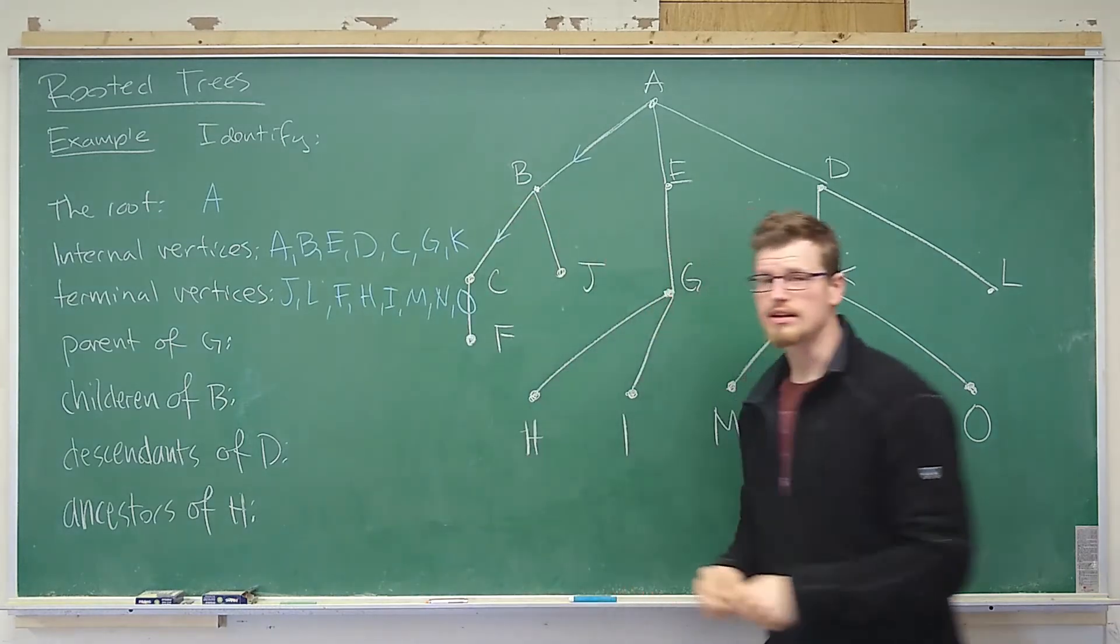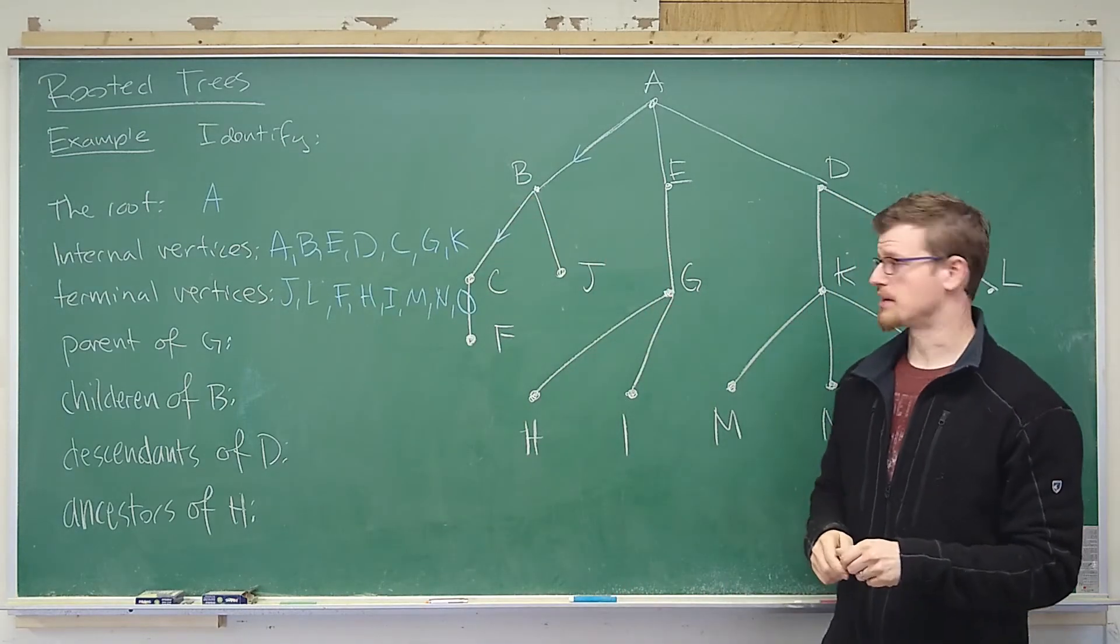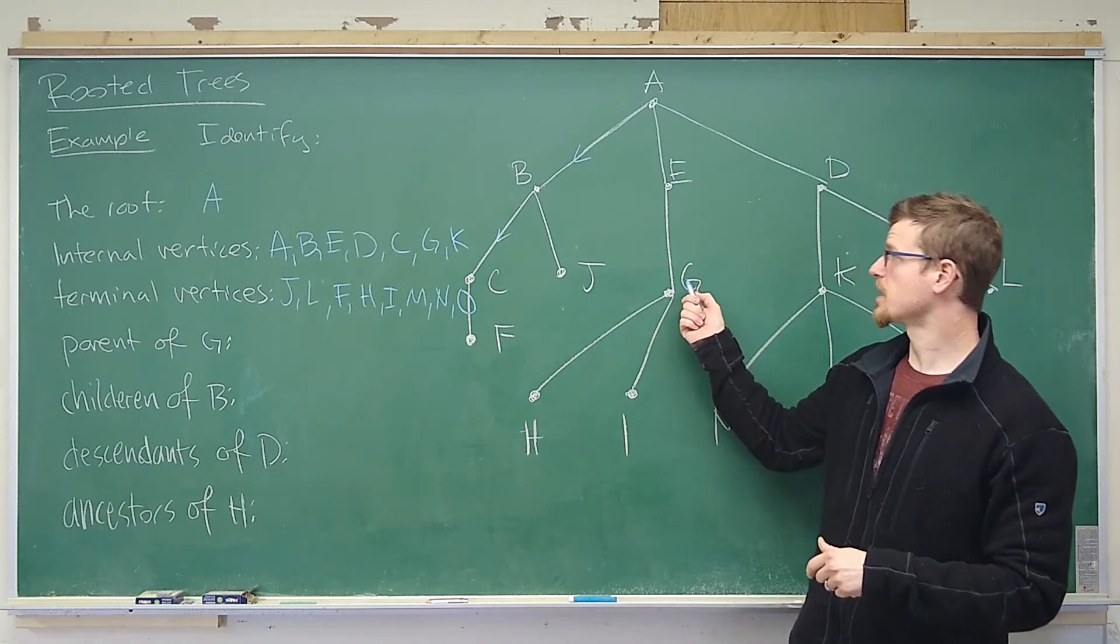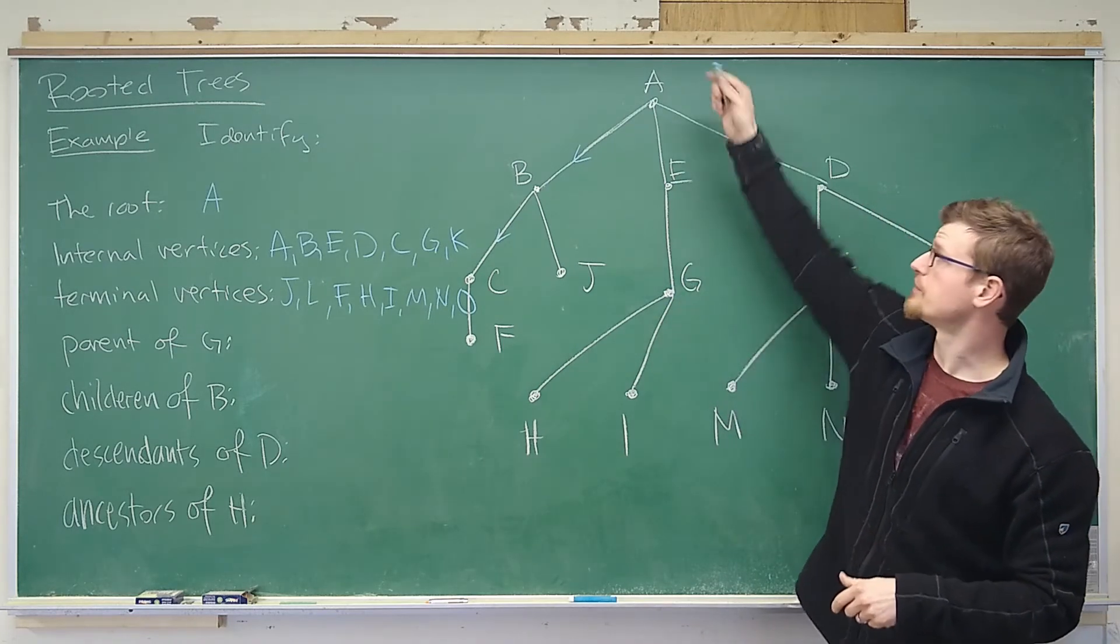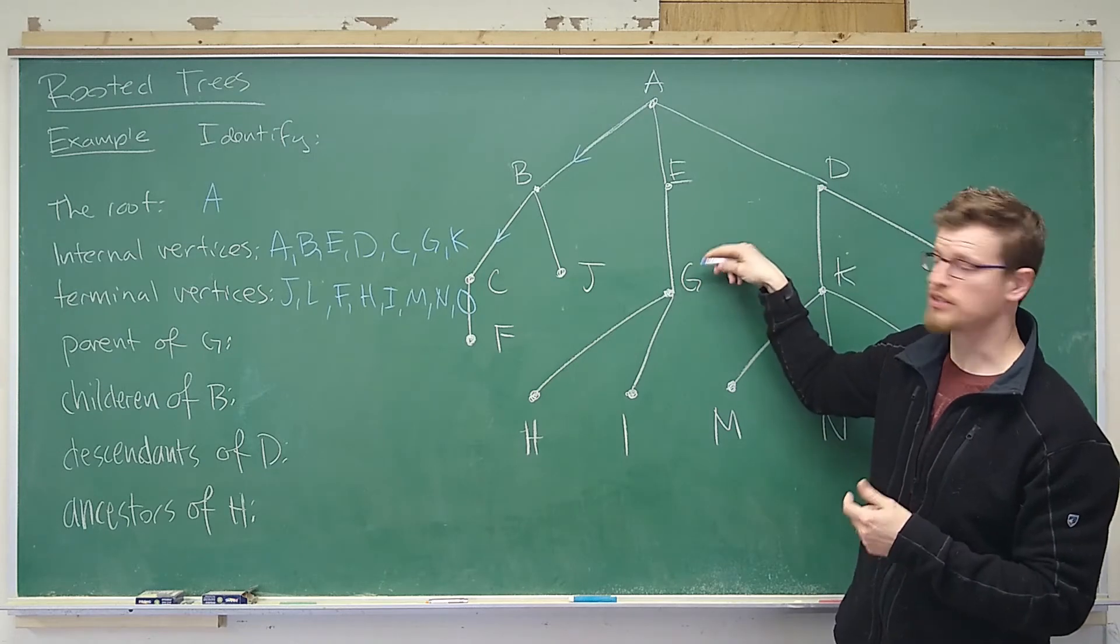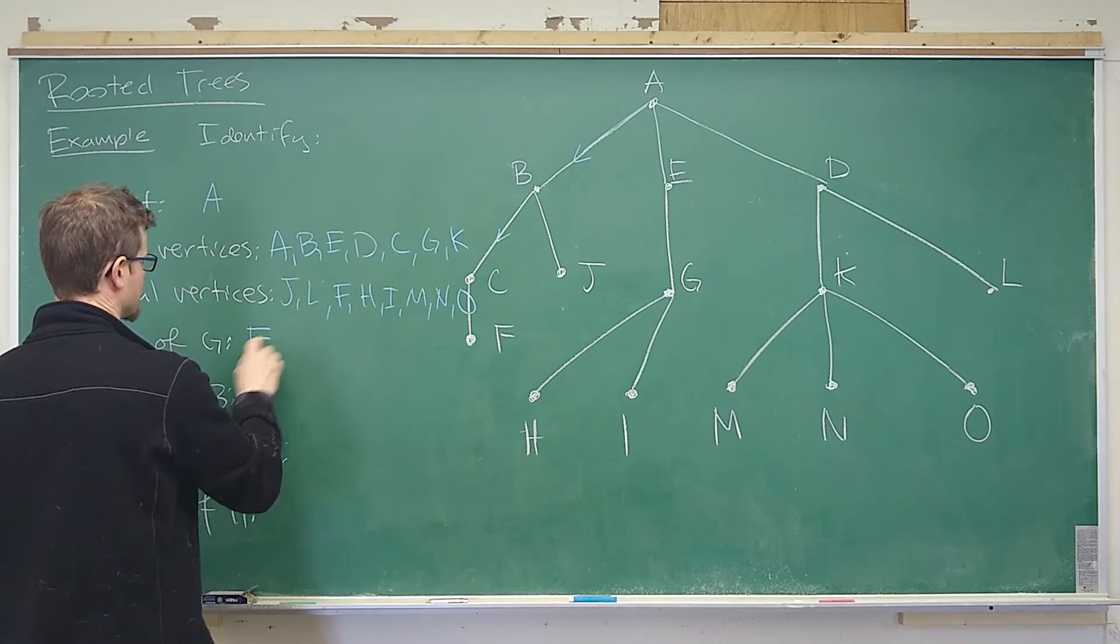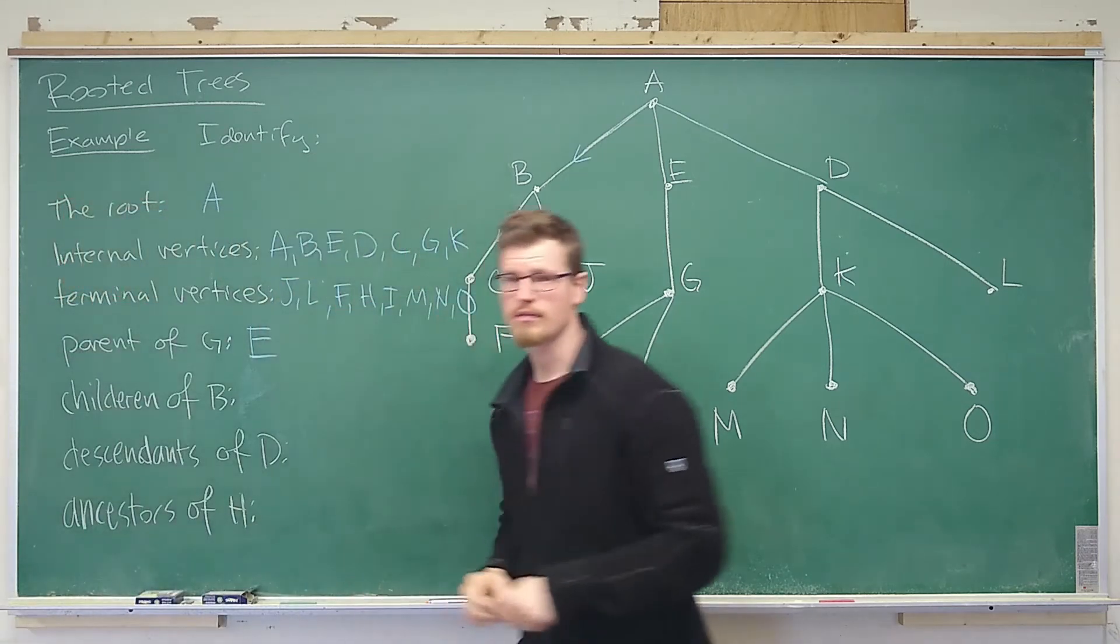All right. Next we just want to identify the parent of g. So you find g and determine which vertex comes before it. If you're traveling from a to g, what's the predecessor to g? E. That is the parent of g.